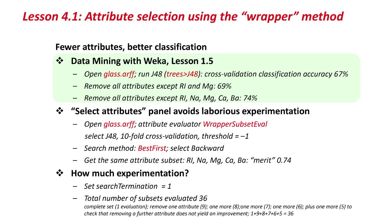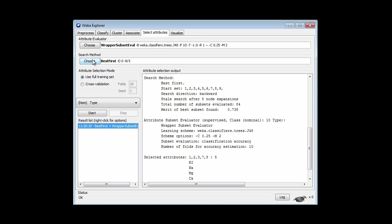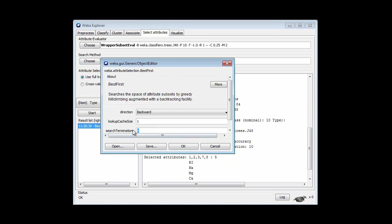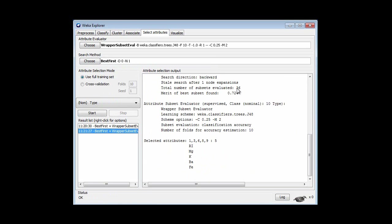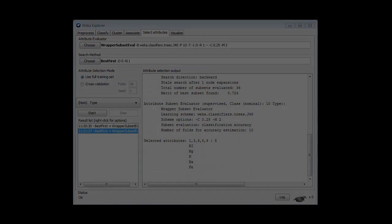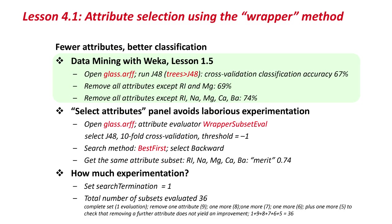A good question is how many subsets we had to evaluate. I'm going to set search termination to 1 and run it again. Here it tells me that it evaluated 36 subsets. Back on the slide, you can count these subsets. It took the complete attribute set, then tried removing all nine attributes one by one — that's nine more evaluations. Then it removed another attribute: eight evaluations, and another one, and another one, giving it the final attribute subset. To check that it was the final subset, and you couldn't do better by removing another attribute, you'd have to do a further five evaluations. If you add all of those up, you get 36 subsets evaluated.